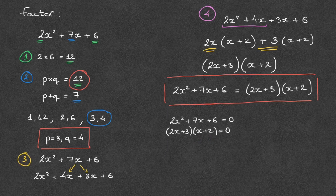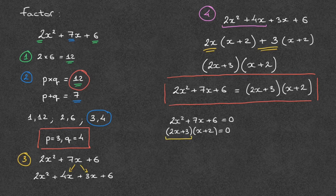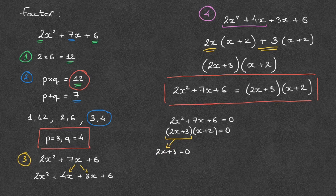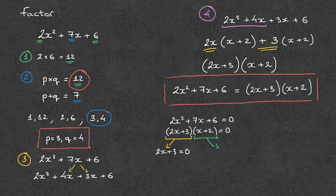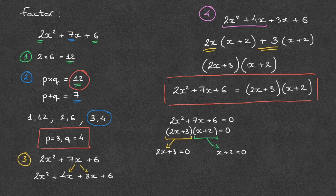In other words, this equation will equal 0 if either 2x plus 3 equals 0, which leads to the equation 2x plus 3 equals 0, or if x plus 2 equals 0, which leads to the equation x plus 2 equals 0. And solving these two equations will lead to the solutions to this quadratic equation.